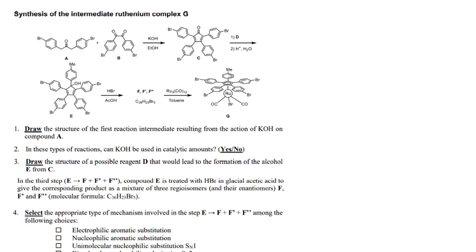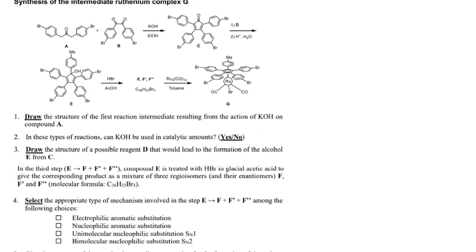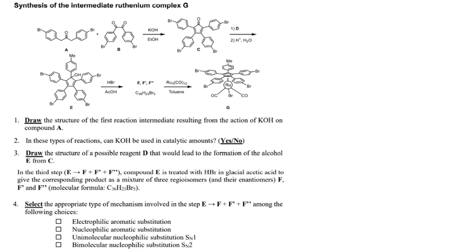Here's a question from the International Chemistry Olympiad 2019 Preparatory Problems, titled Synthesis of the Intermediate Ruthenium Complex G. I want you to appreciate the organic chemistry behind making such ruthenium complexes. We are going to solve problems 1 to 6 of this problem, and we will solve the rest later.